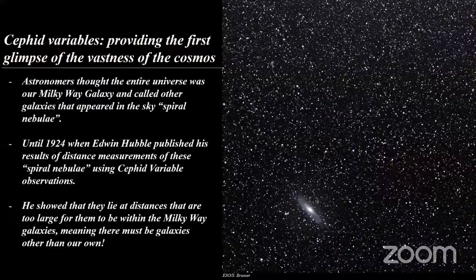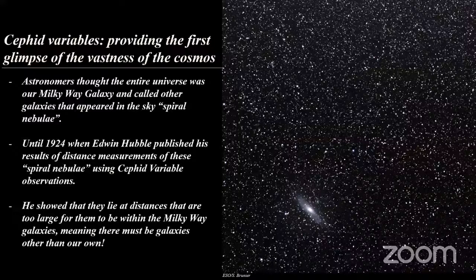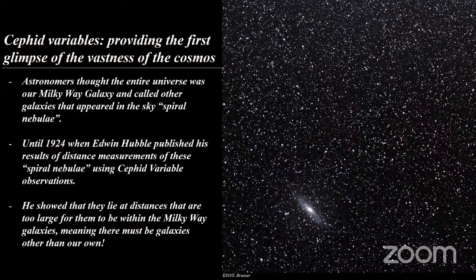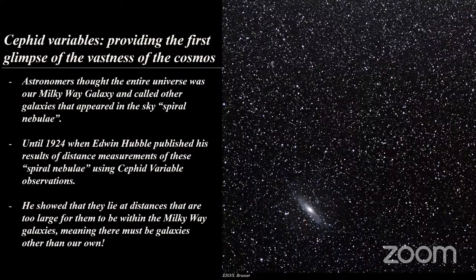This is exactly what Edwin Hubble did. Before 1924, all astronomers thought that the universe was only our Milky Way, and that galaxies like the Andromeda galaxy — which they called spiral nebulae — were just another nebula and not an entire galaxy of its own. But when Hubble used his distance measurements from Cepheid variables, he proved that these spiral nebulae are too far to be within our galaxy, so they must be galaxies of their own. That was the first major transformative view of the cosmos that Edwin Hubble provided.